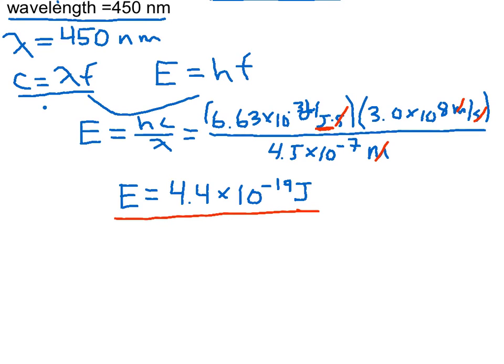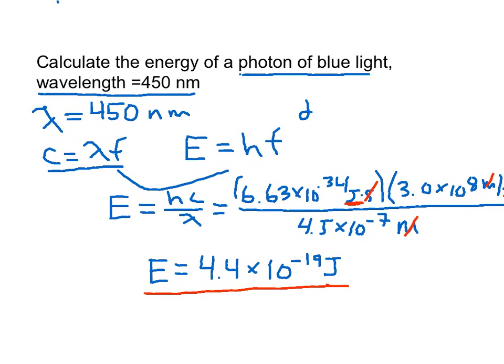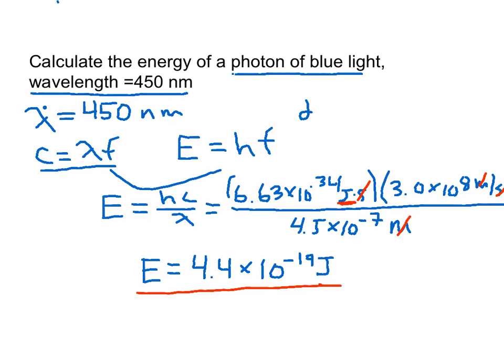So each photon of this blue light has exactly 4.4 times 10 to the negative 19th joules. Thanks for watching.